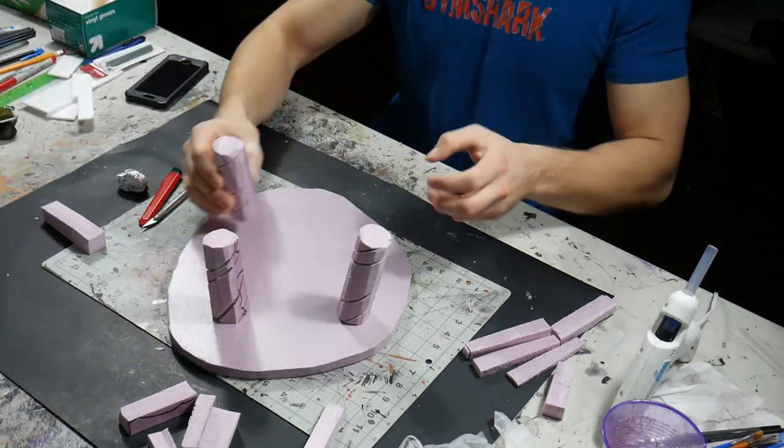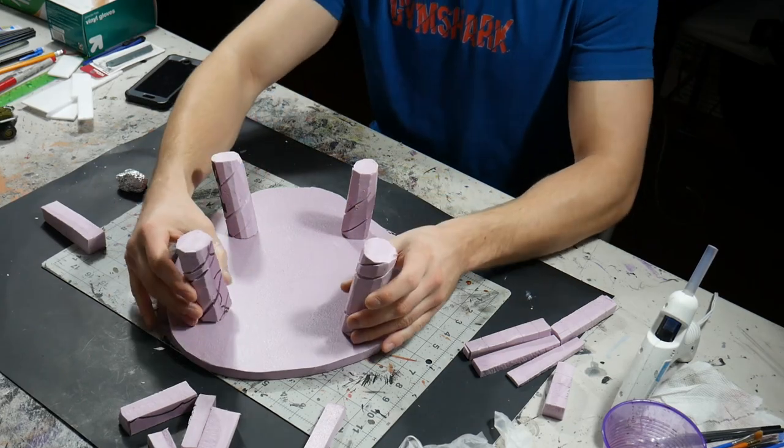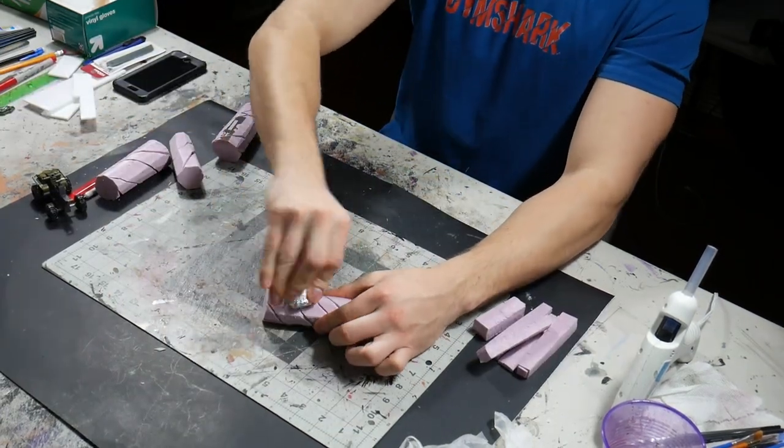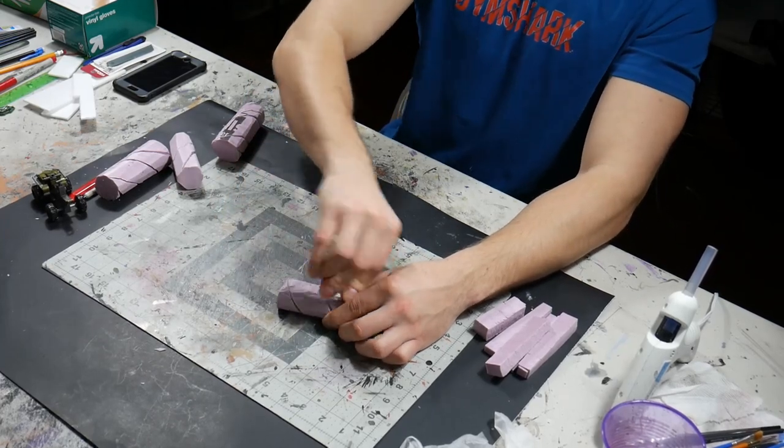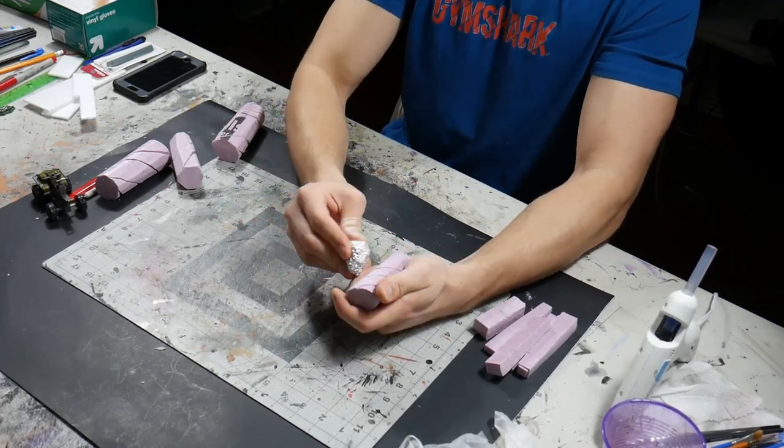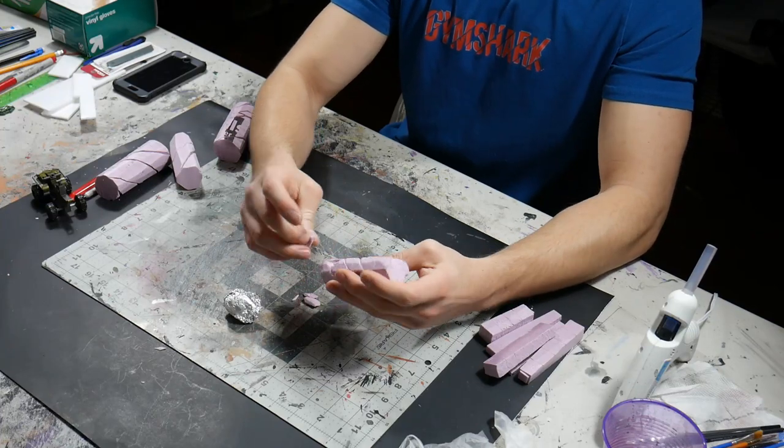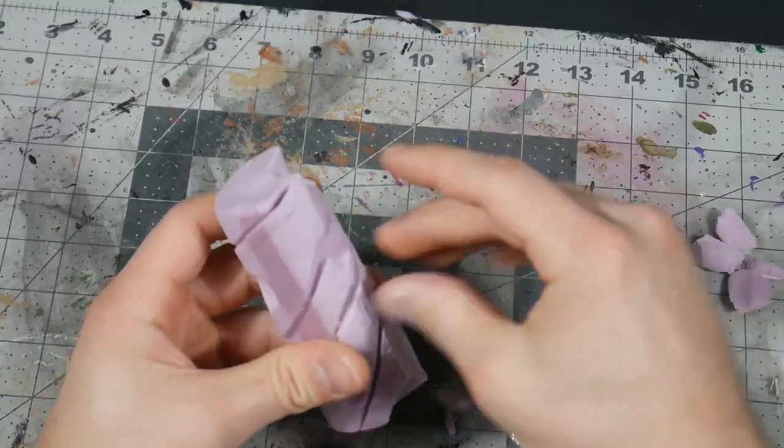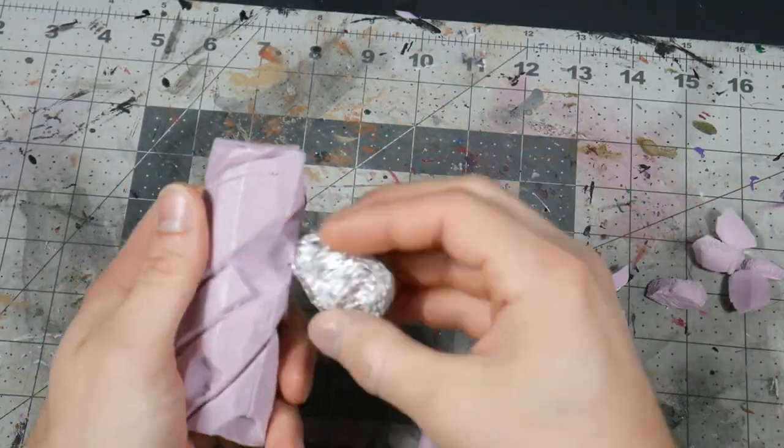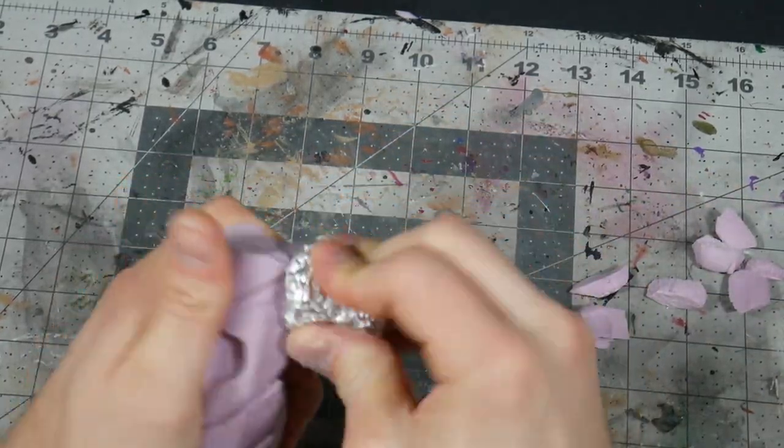Now I'm just placing them all around the diorama just to kind of get a feel of what I want and hitting them with a tinfoil ball as well to add that stony texture. I'm also using my fingers just to rip up various pieces and make them seem way older and more used and damaged.